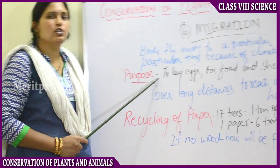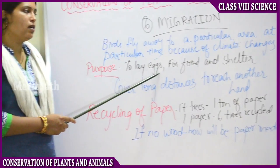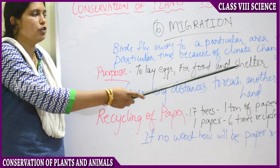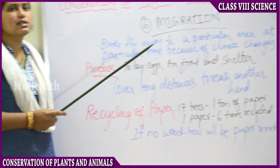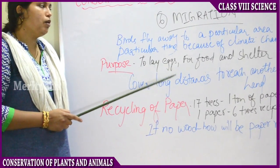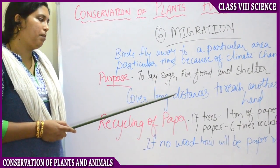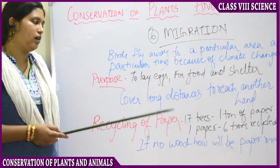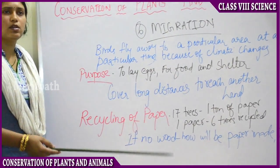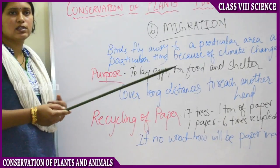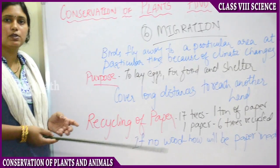The purposes of migration include: sometimes animals or birds move to lay eggs, or for food or shelter purposes. Generally, migration is done mainly by birds, while animals very rarely migrate. Birds cover miles and miles, moving from continent to continent for the purpose of laying eggs, food, and shelter. They cover long distances to reach other lands. For example, migratory birds come from Australia to India.